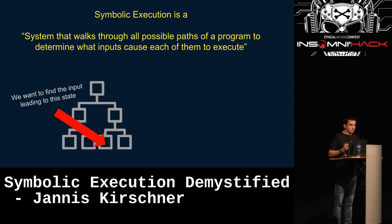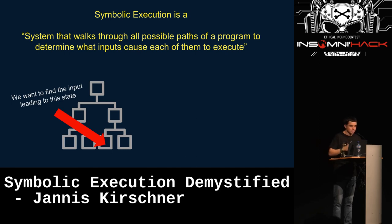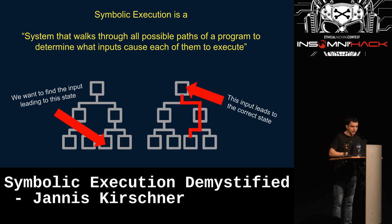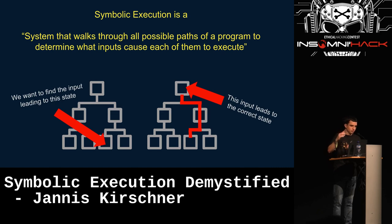How do these systems work? Imagine you have a certain binary state that's interesting — for example, code that's been deobfuscated, a binary that's been unpacked, or a crackme with a solution string saying 'challenge solved.' Symbolic execution tries to match those binary states to an input. We can visualize your binary as a tree of basic blocks and branches, and the symbolic execution engine works through those, matching binary states to input.